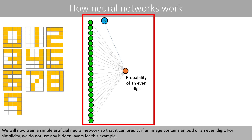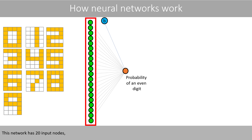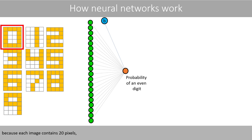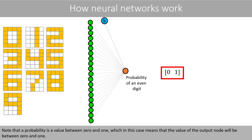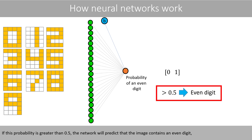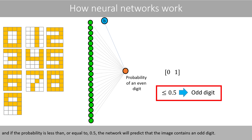For simplicity, we do not use any hidden layers for this example. This network has 20 input nodes, because each image contains 20 pixels, and one output node that computes the probability that the image contains an even digit. The probability is a value between 0 and 1. If this probability is greater than 0.5, then the network will predict that the image contains an even digit, and if this probability is less than or equal to 0.5, then the network will predict that the image contains an odd digit.